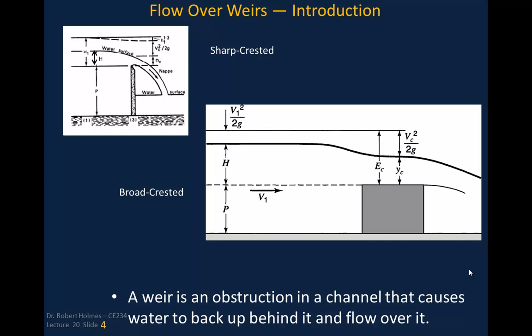We have two broad categories for weirs. One is called a sharp-crested weir and the other is a broad-crested weir. The sharp-crested weir is very sharp — you have a nappe that springs free, with atmospheric pressure conditions both underneath and on top. The broad-crested weir is much wider longitudinally along the flow, and the flow stays in contact with the weir the entire time.